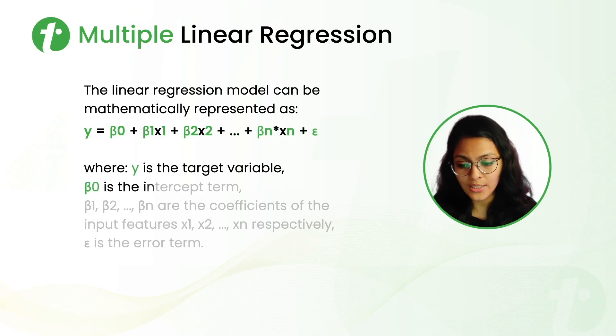Where beta naught is the intercept term, beta 1, beta 2, beta n are the coefficients of the input features of X1, X2, Xn respectively. And E is the error term.